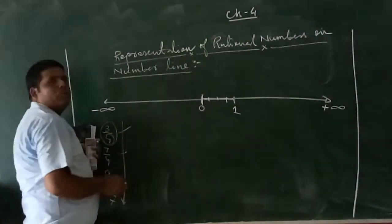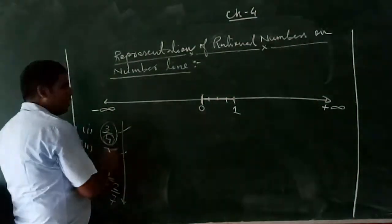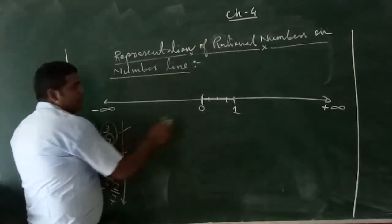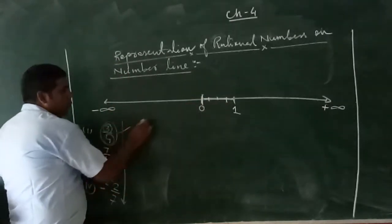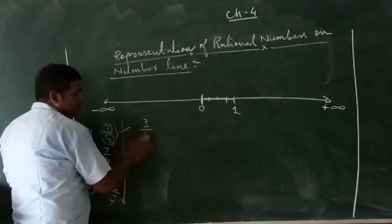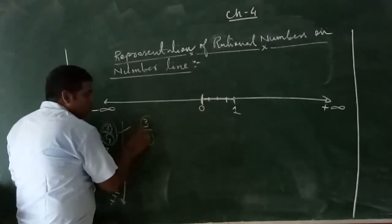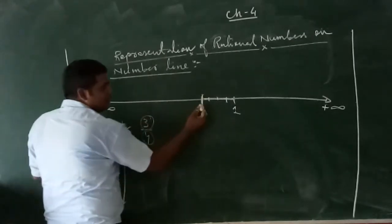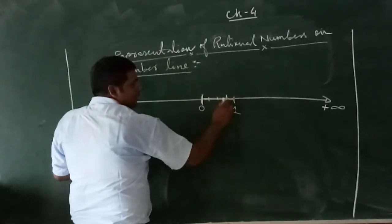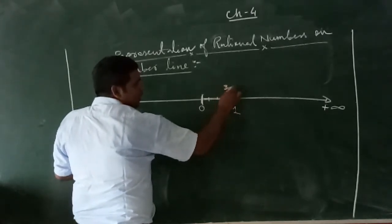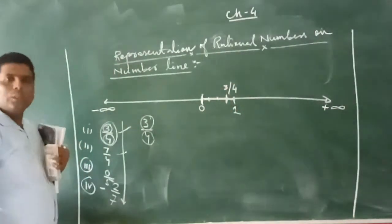Now we want to denote three by four on this number line. In the given one, two, three, and four divisions, we will take only three. We divide zero to one into four parts and count three parts — one, two, and three. This is the place where three by four is to be denoted.